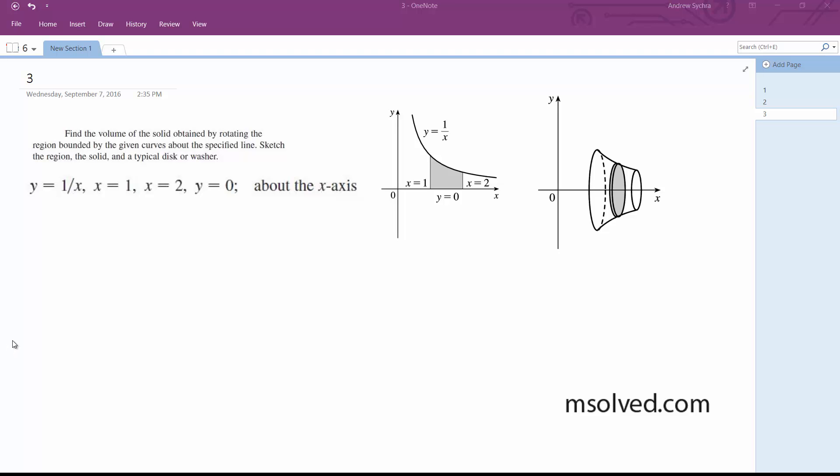All right, so we're going to find the area bounded when you rotate this curve around the x-axis. So to do that, we're going to be bounded between x equals 1 and x equals 2, so that's going to be your integral.